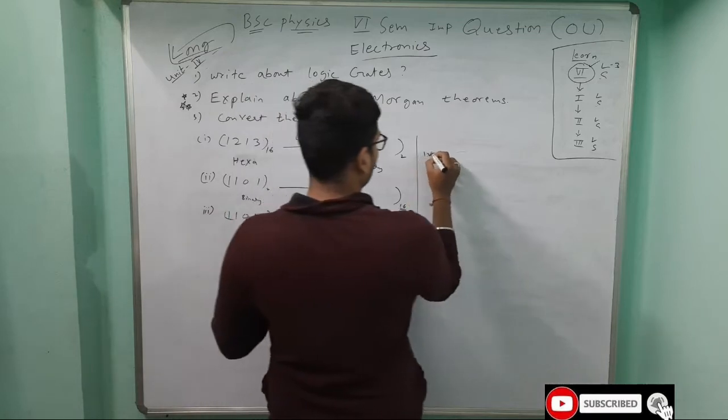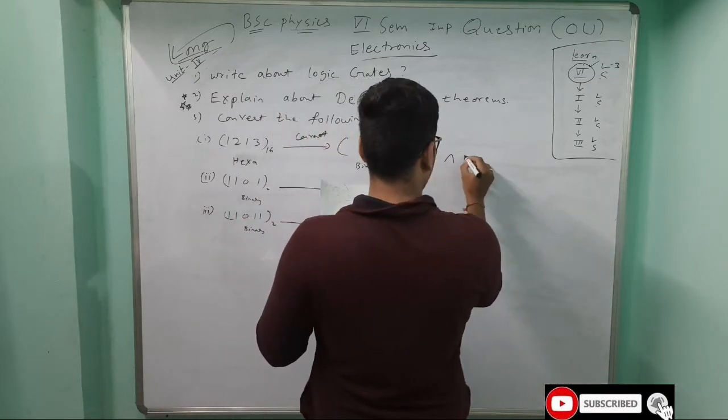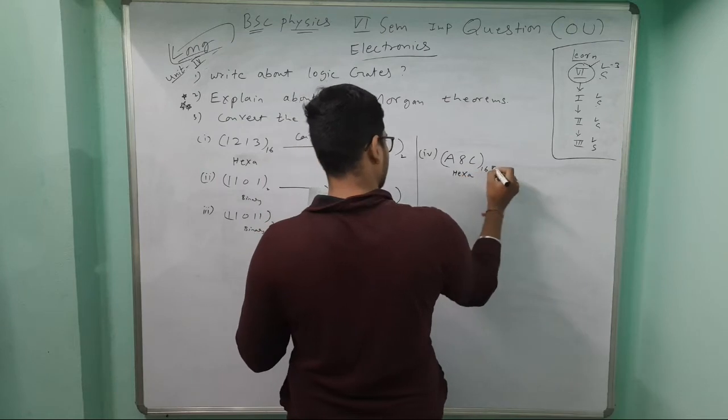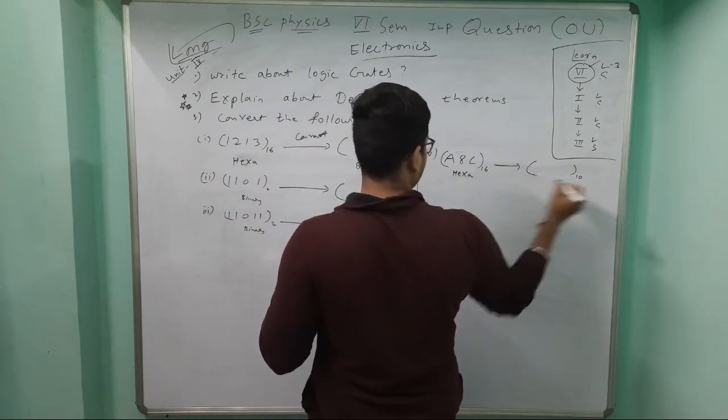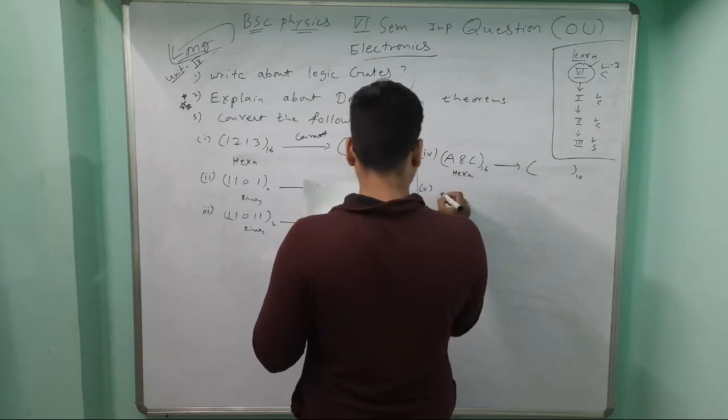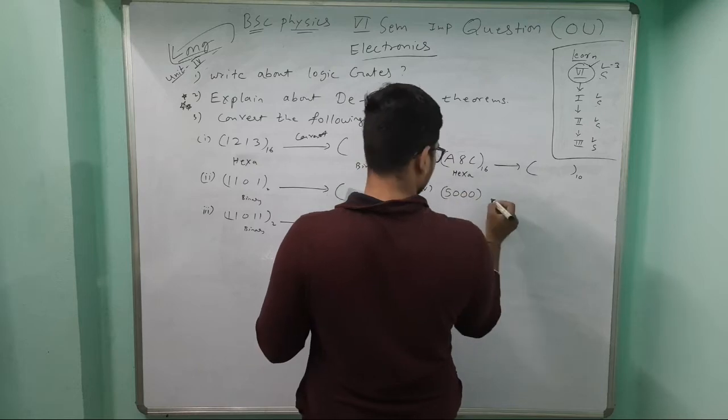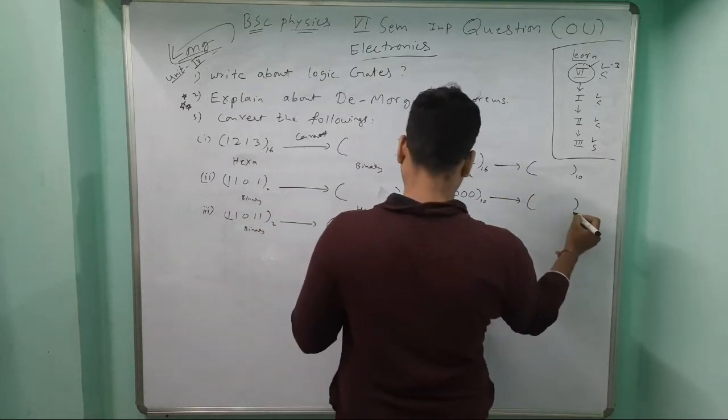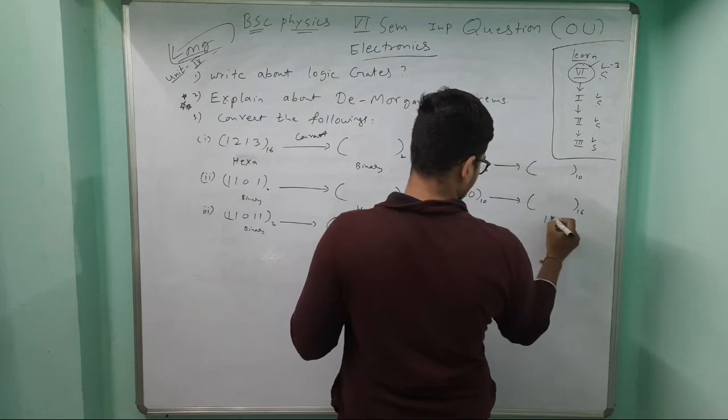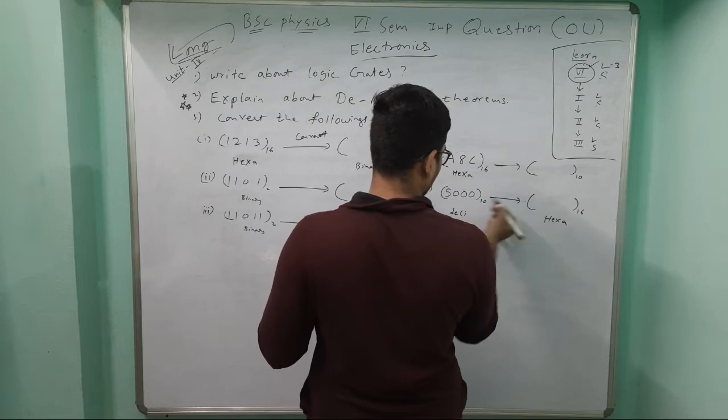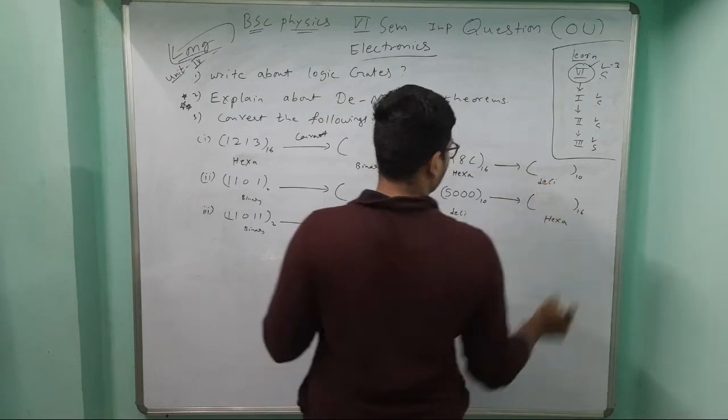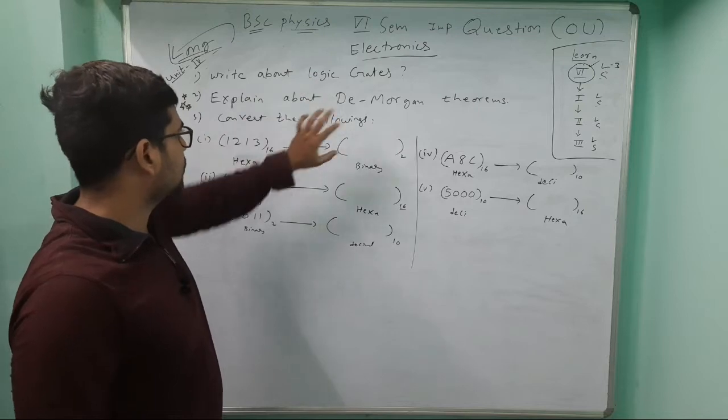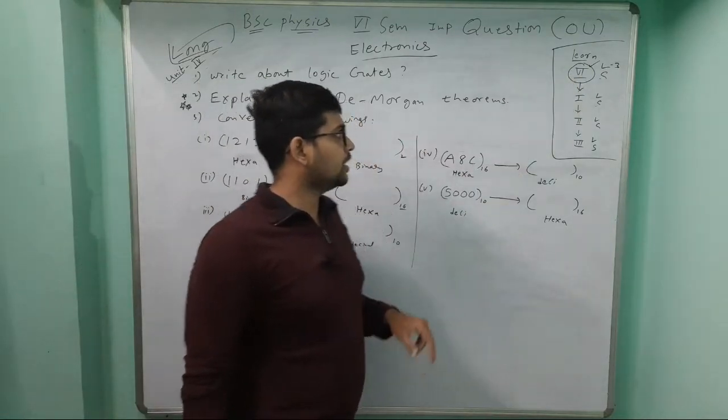Fourth question: convert A8CD hexadecimal to decimal. If you practice, you'll know how to do this. Fifth question: this is in decimal, convert to hexadecimal. So three questions in Unit 4: logic gates, De Morgan's theorem, and conversion. Three long answer questions are over. Now I'll go with Unit 1.